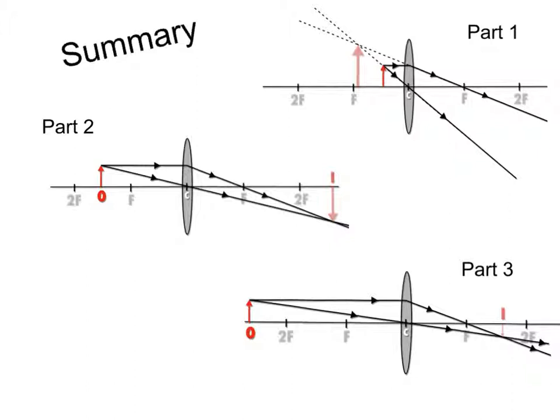We then moved the object in part two. We moved it further out than F. We still got a magnified image but it's different. It's inverted and it's formed by rays that meet, so it's real. So it's still magnified but now it's real and inverted.